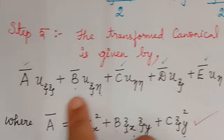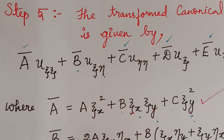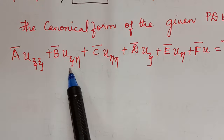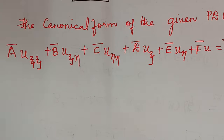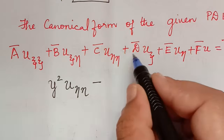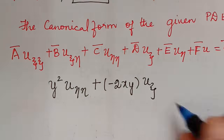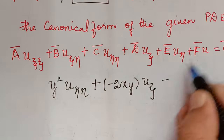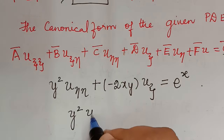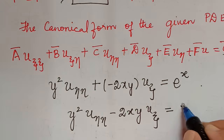The transformed canonical equation is now written. Since ā = b̄ = 0, those terms vanish. Substituting c̄ = y², d̄ = −2xy, ē = f̄ = 0, and ḡ = e^x, the canonical form is: y² u_ηη − 2xy u_ξ = e^x.